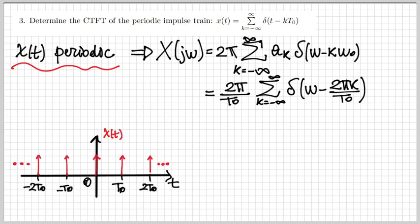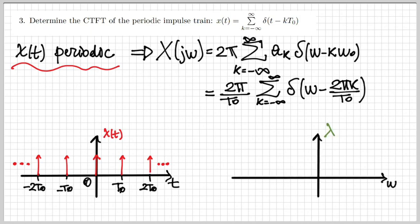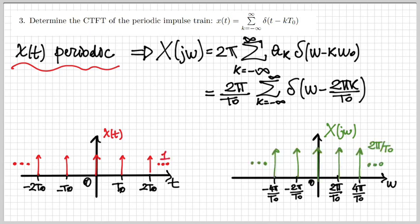Here is the impulse train x of T in the time domain: the period is T₀ and the amplitude is 1. The Fourier transform X of jω is again an impulse train, with period 2π/T₀ in the frequency domain and amplitude 2π/T₀. There is a duality relationship — when the time-domain impulse train has a shorter period and gets more crowded, the frequency-domain train's impulses are pushed farther apart, since the period 2π/T₀ is inversely proportional.